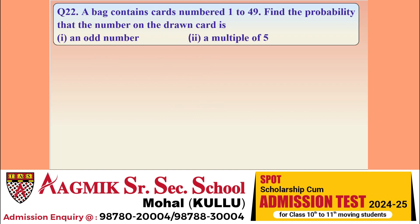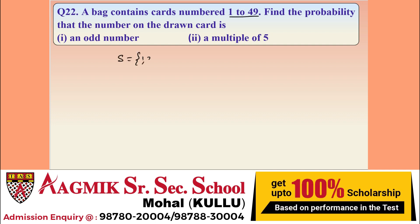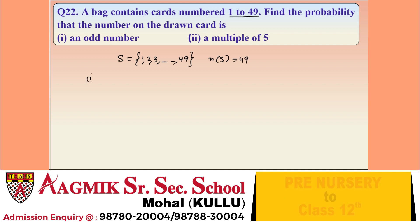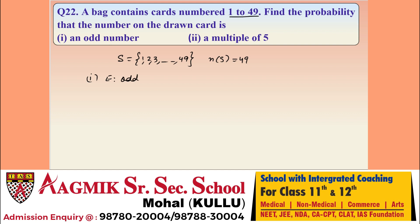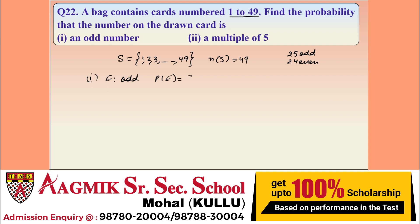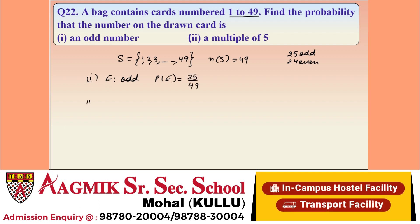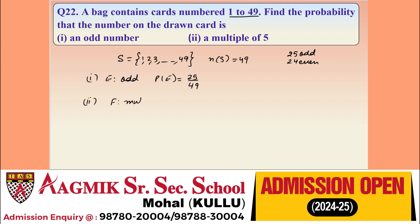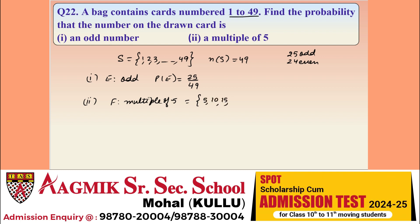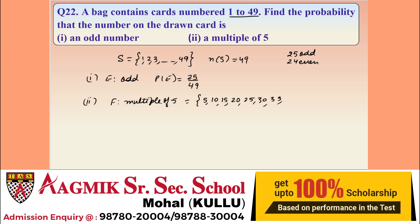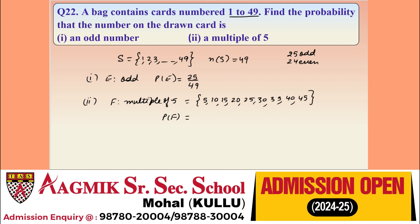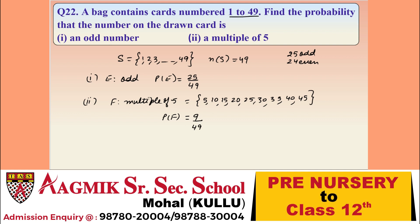Question 22: a bag contains cards numbered 1 to 49. The sample space has 49 elements. Part 1: event E is that the number is odd. Among 49 numbers, there are 25 odd numbers. Probability of E = 25/49. Part 2: event F is that the number is a multiple of 5. The multiples of 5 from 1 to 49 are: 5, 10, 15, 20, 25, 30, 35, 40, 45 — that is 9 numbers. Probability of F = 9/49.